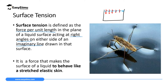The force on the marginal line acts at 90 degrees inward. This force which pulls particles inward makes the surface of the liquid appear like a stretched elastic skin. So you can also define surface tension as a force that makes the surface of a liquid behave like a stretched elastic skin.